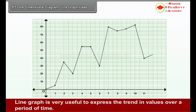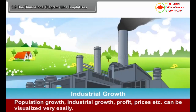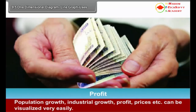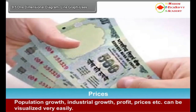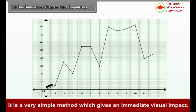A line graph is very useful to express the trend in values over a period of time. Population growth, industrial growth, profit, prices, etc. can be visualized very easily. It is a very simple method which gives an immediate visual impact.